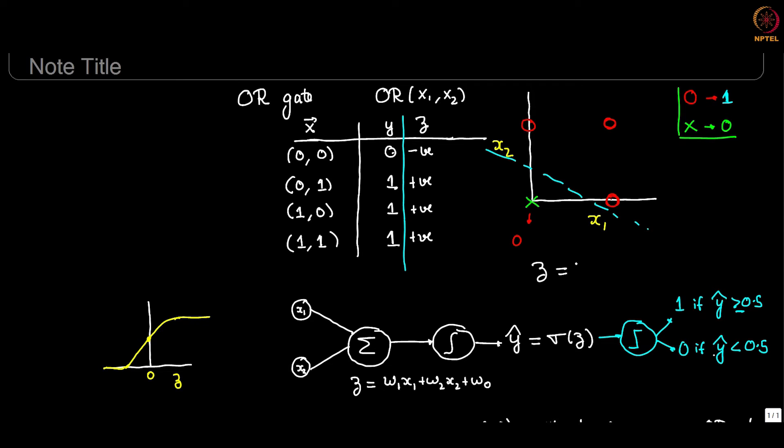Now we also know what Z is: Z is W0 plus W1 X1 plus W2 X2. So let us consider this case: both X1 and X2 are 0, we want Z to be negative, which means automatically that W0 has to be negative. Also notice that without W0, we could not have made this possible at all. If you just have W1 X1 plus W2 X2, that is a simple linear combination of X1 and X2 without this affine, without this bias term, you cannot make this case work out at all. So we know now that W0 has to be negative, we also know that W1 and W2 have to be positive to make these cases work.